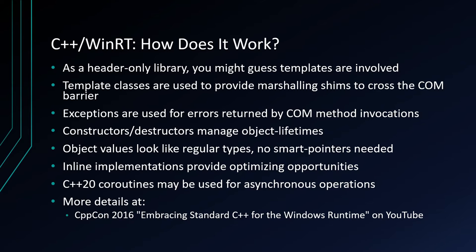Object values just look like regular types — you don't need to manage smart pointers yourself. If you've done ATL COM programming in the past, you had to maintain the smart pointers yourself. Here the language projection takes care of all that. Because everything is a header implementation, it provides more optimization opportunities to the compiler, resulting in smaller and faster executables. They also have coroutine support — looking at the implementation, they were using the C++17 coroutine support from experimental headers.